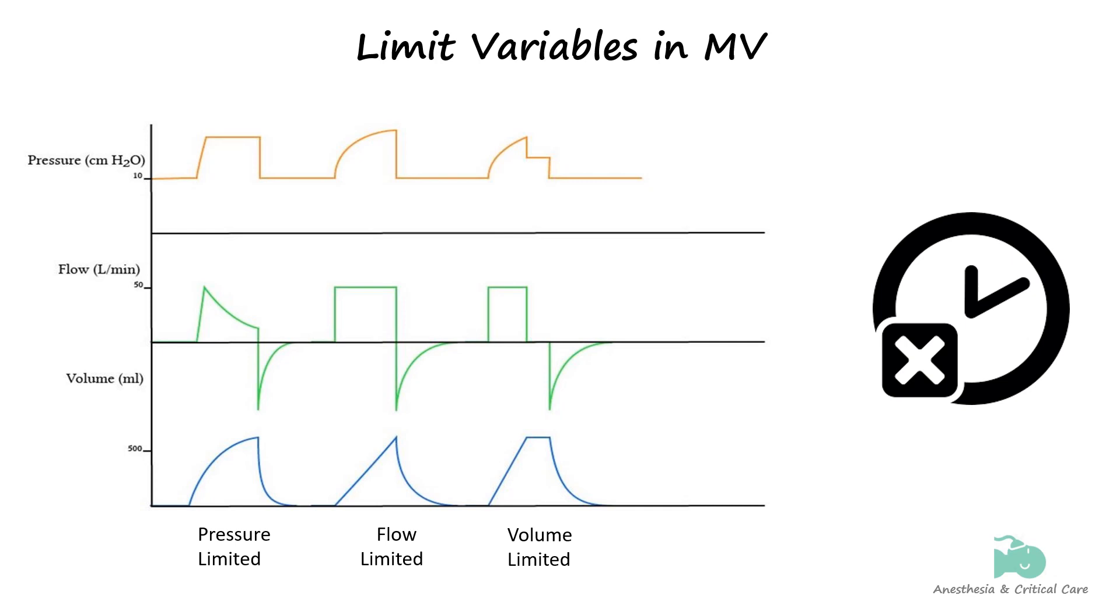The limit variable of a mode of ventilation can occasionally be discerned from the squaring or plateauing of the ventilator waveform for that variable. This plateau occurs when the limit is attained. In pressure-limited ventilation, the pressure waveform gets squared, and similar squaring happens in flow and volume-limited ventilation.